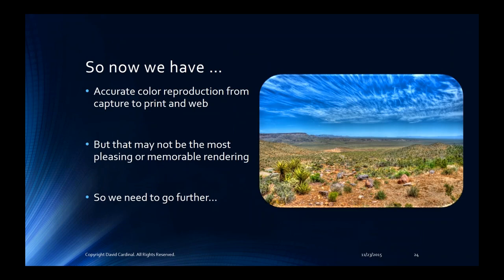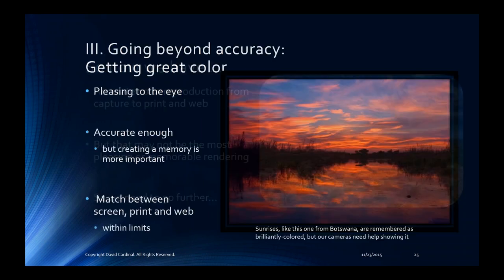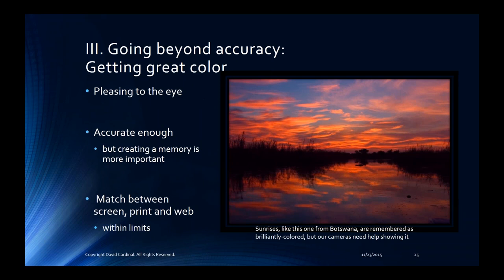So now we've got accurate color because we've got end-to-end color management. But for travel and vacation photography, we don't always want things to look exactly the way the camera recorded them. We're not trying to shoot a product shot for a catalog — we're trying to make a pleasing memory. We want color that's pleasing to the eye, accurate enough so it looks like a photograph, but creating a great memory or wall hanging is more important than strict accuracy. We're not trying to be photojournalists — we're trying to wow people or communicate something.